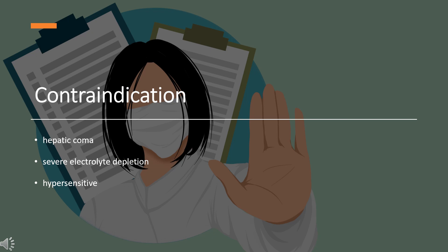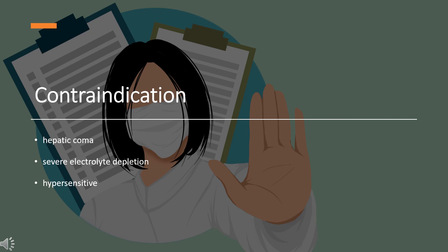Contraindication. Bumetanide is contraindicated in patients in hepatic coma or in states of severe electrolyte depletion until the condition is improved or corrected. Bumetanide is also contraindicated in patients hypersensitive to this drug.